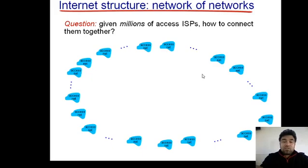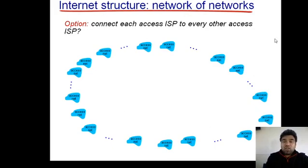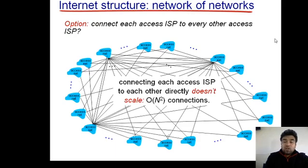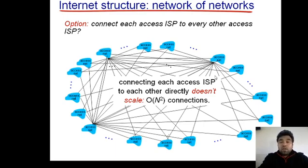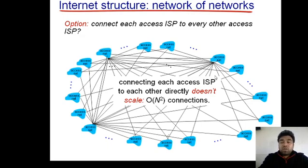We have millions of internet access providers, and if they were all connected with each other directly, you can see the complexity level — how complex this infrastructure would be. To make this infrastructure less complex, we introduce three types of internet service providers: first, access internet service providers; second, regional internet service providers; and third, global internet service providers, which cover international coverage.